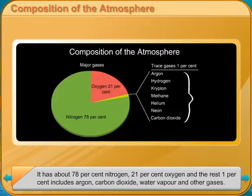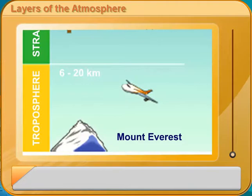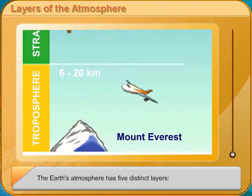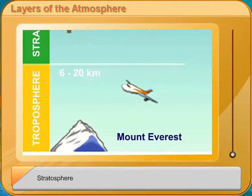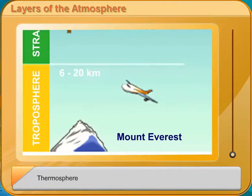The Earth's atmosphere has 5 distinct layers: troposphere, stratosphere, mesosphere, thermosphere and exosphere.